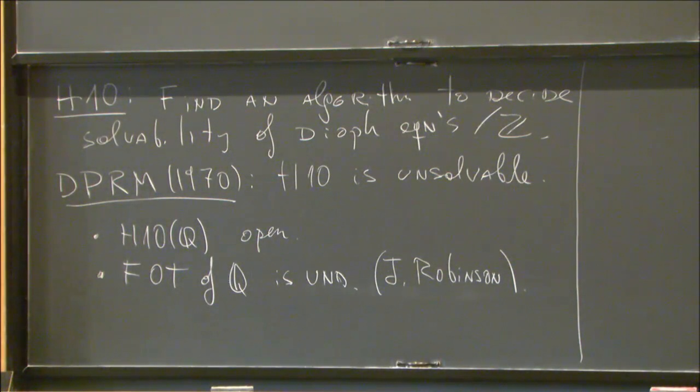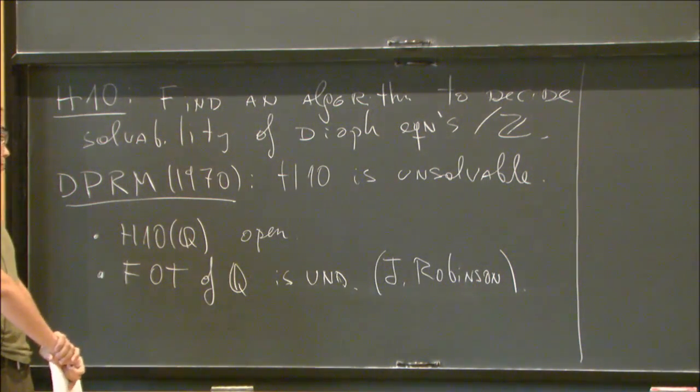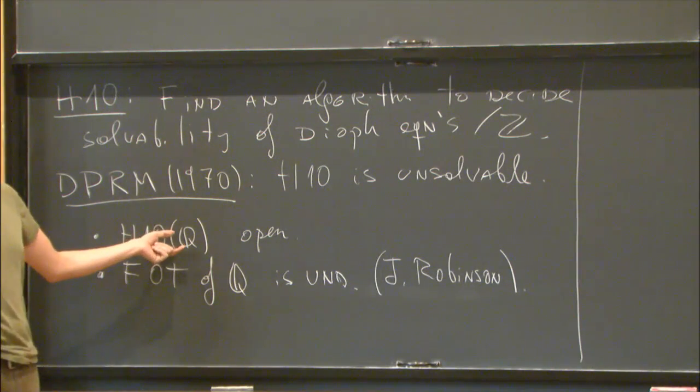But the existential question, the existence of solutions to the Diophantine equation, remains open. And the reason, as I tried to convince you in a minute, is that we don't really understand the Diophantine sets in Q. That's maybe the reason why we don't know the answer to this.